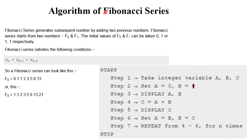The Fibonacci series generates subsequent numbers by adding the two previous numbers. The series always starts with two numbers: F(0) and F(1). Sometimes it starts with either 0 and 1, or 1 and 1. But while implementing the program, we use the series starting with zero. So zero and one are the constant numbers in the Fibonacci series.